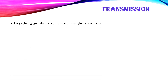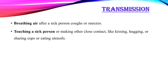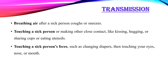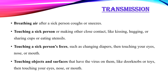Transmission of the disease usually takes place by breathing air after a sick person coughs or sneezes, touching a sick person or making close contact like kissing or hugging, touching a sick person's feces such as when changing diapers and then touching your eyes, nose or mouth, and touching objects and surfaces that have the virus on them like doorknobs or toys, then touching your eyes, nose or mouth.